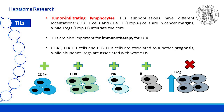CD4, CD8 T cells and CD20 B cells are correlated with a better prognosis, while abundant Tregs are associated with worse overall survival. Moreover, high CXCL9 expression, which in animal models stimulates NK cell recruitment, enhancing anti-tumor immunity, is correlated with better survival after resection and with a large number of tumor-infiltrating natural killer cells.